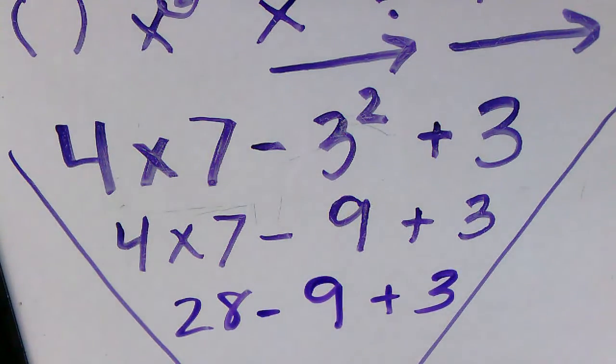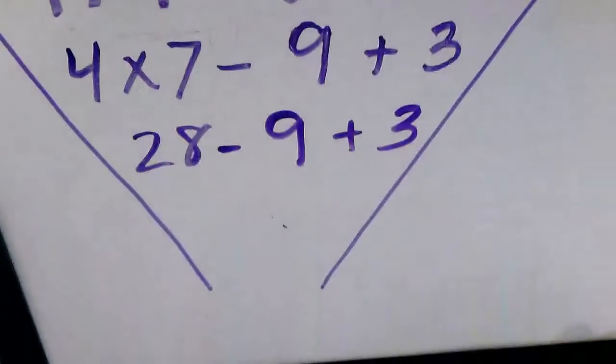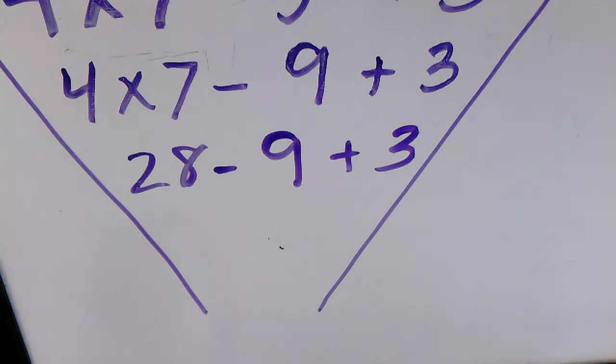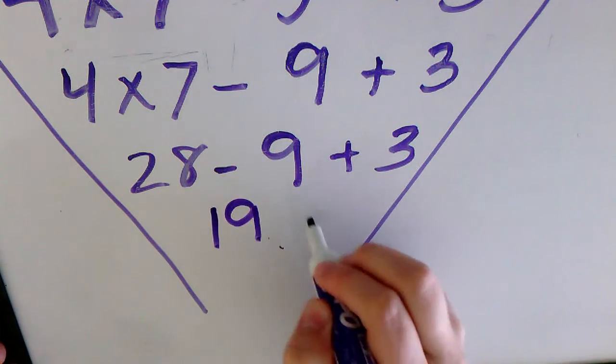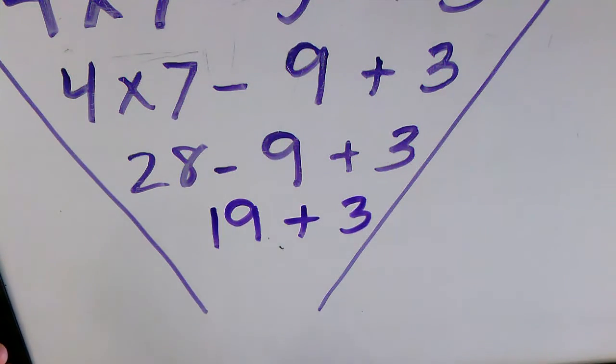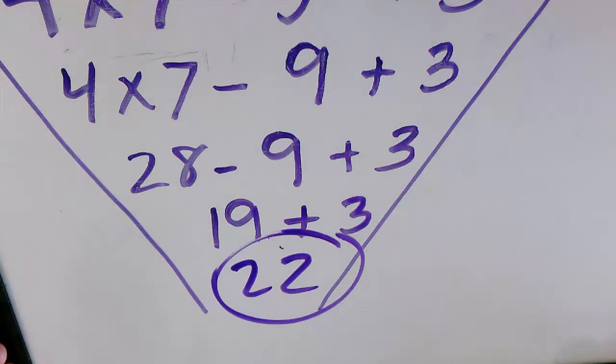Now I need to look for addition and subtraction. I have both, but because they are equal, I go left to right. So 28 minus 9 is 19, plus 3. Now I do 19 plus 3, which is 22, and that's my final answer.